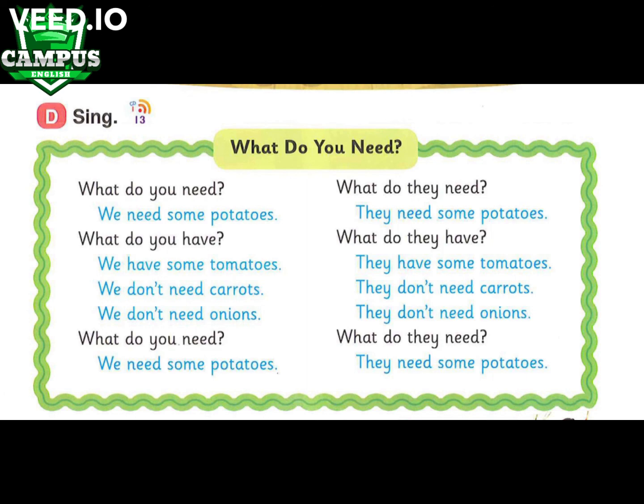What do they have? We have some tomatoes. They don't need carrots. We don't need onions. What do they need? We need some potatoes. What do they need? We need onions.